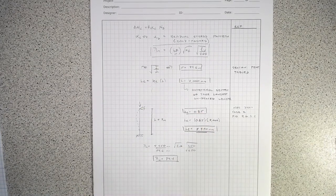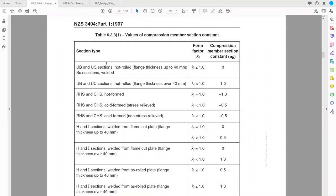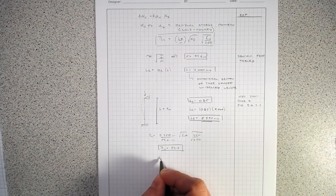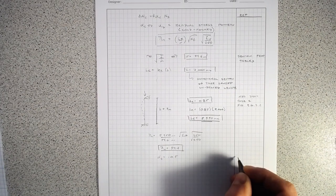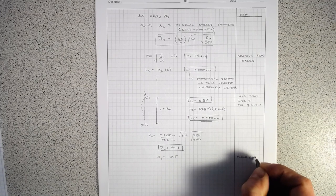We now need to find alpha_B. We go to the steel standard and look up the table. It's dependent on residual stress pattern. For a cold-formed circular hollow section — whether stress-relieved or non-stress-relieved — we find alpha_B equals negative 0.5. That comes from table 6.3.3(1), and the CHS cold-formed K_F equals 1.0.